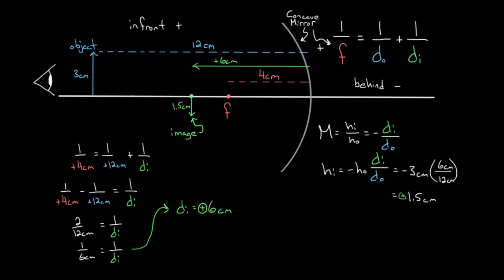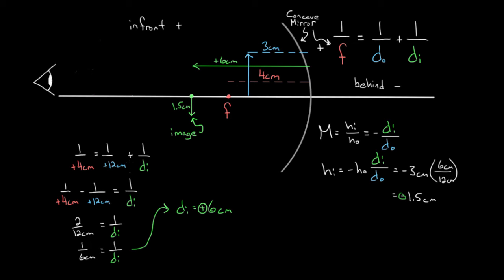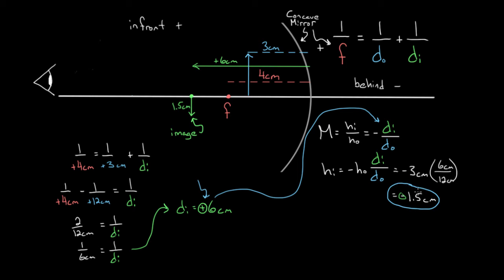What would change if we moved the object? Say instead of placing it at 12 centimeters, we moved it inside to about three centimeters from the mirror. Everything would be the same — you'd just plug in positive three instead of positive 12 for the object distance. The mirror equation works exactly the same way. You solve for image distance, and then plug that into the magnification equation to find how big the image is and whether it's right-side up or upside down.